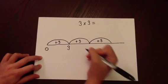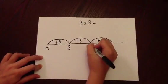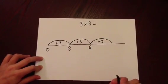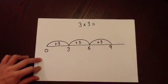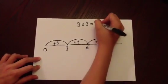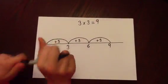So 0 add 3 is 3. 3 add 3 is 6. 6 and 3 more is 9. The answer to 3 times 3 is 9.